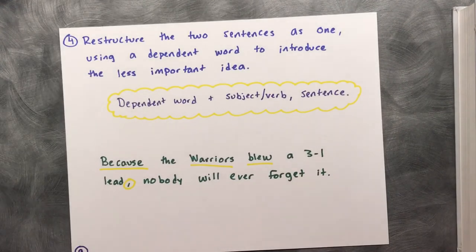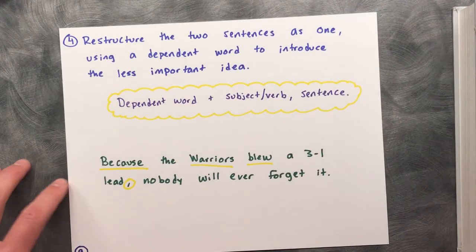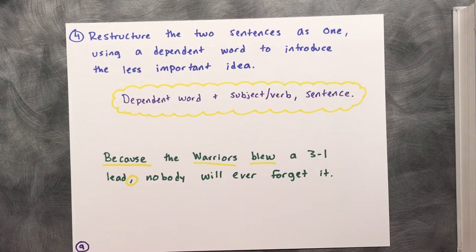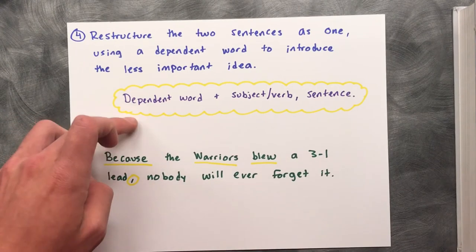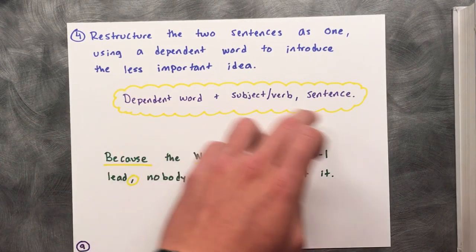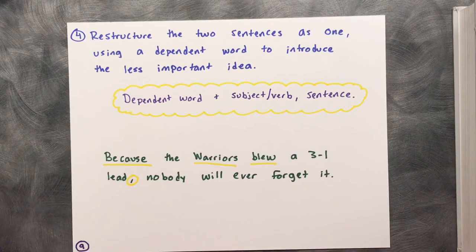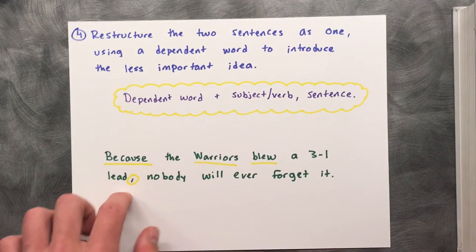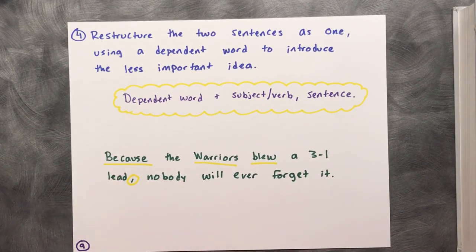Last but not least, you can restructure the two sentences as one using a dependent word to introduce the less important idea: dependent word, plus subject and verb, then the main sentence. For example: 'Because the Warriors blew a 3-1 lead, nobody will ever forget it.'